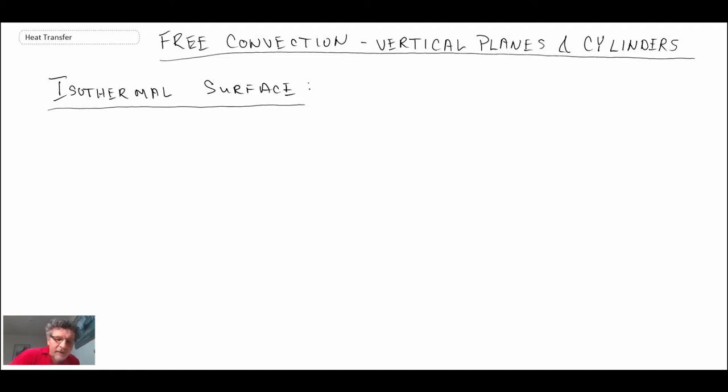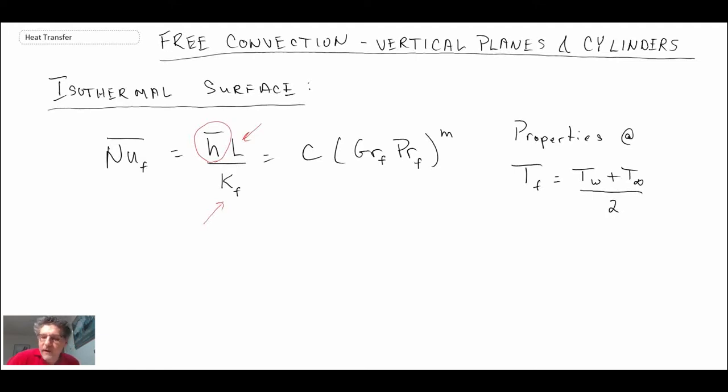The relationship that we often use is the Nusselt number expressing the convective heat transfer in any of these natural convection cases. We have a length scale L, and in the denominator with our Nusselt number is the thermal conductivity for the gas evaluated at the film temperature. Wherever you see the subscript f, that is referring to properties at the film temperature, which is the wall temperature plus the ambient temperature outside of our heated object divided by two.